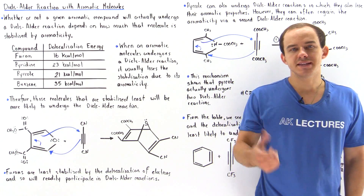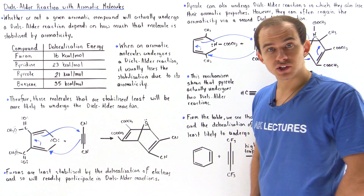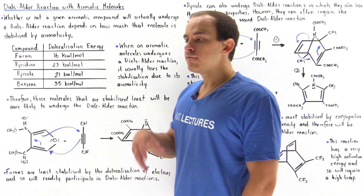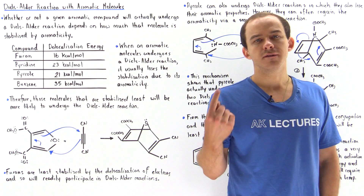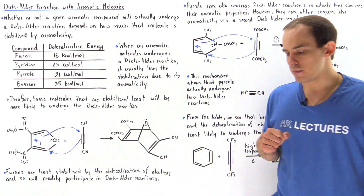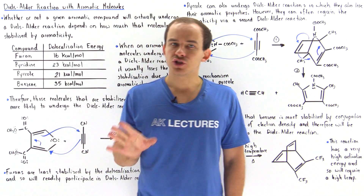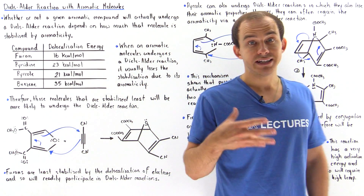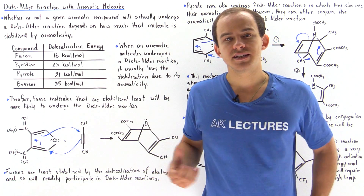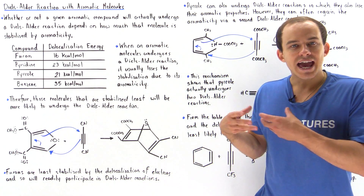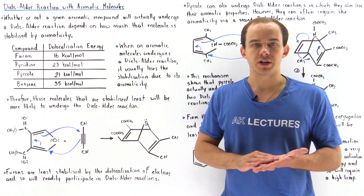Aromaticity is a very stabilizing phenomenon. It stabilizes a ring molecule because it allows for the delocalization of electron density among all the different orbitals within that given molecule. Whether or not a given aromatic compound can undergo the Diels-Alder reaction depends on the delocalization energy — the energy by which it is stabilized due to that aromatic property.